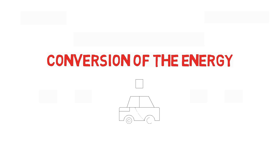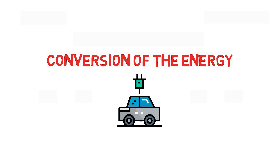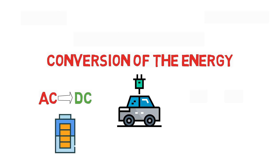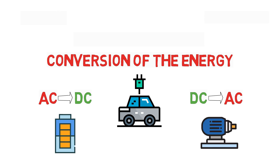Throughout this whole video we haven't seen anything besides the conversion of energy, and that's how the whole powertrain of an electric vehicle works. To give a quick summary: the conversion of AC to DC is done to store the energy in the battery, and the conversion from DC to AC is done again to drive the motors.